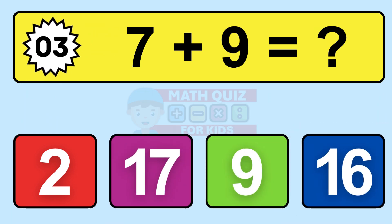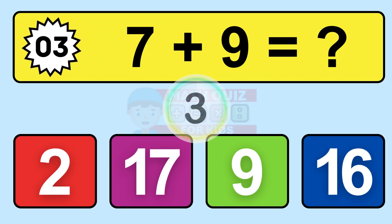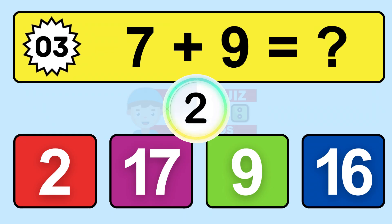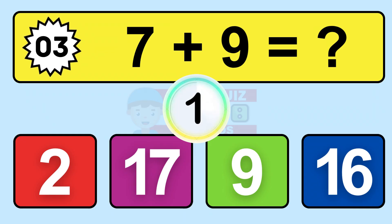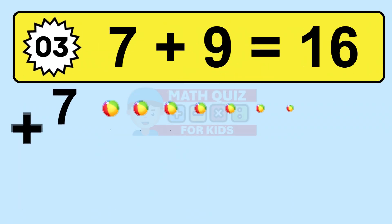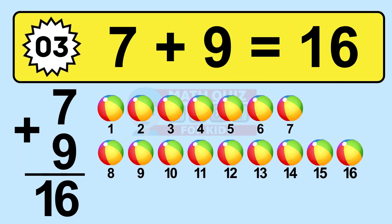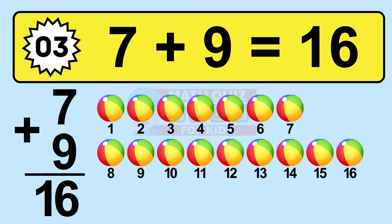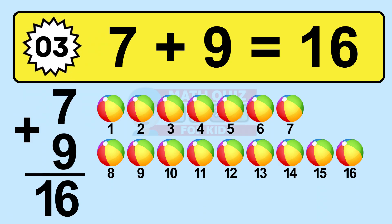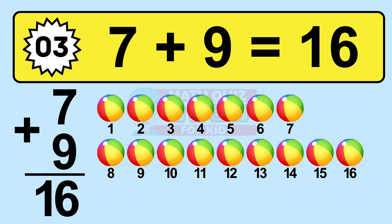Question three: seven plus nine equals what? So the answer is seven plus nine is 16. Let's count it. 1, 2, 3, 4, 5, 6, 7, 8, 9, 10, 11, 12, 13, 14, 15, 16.